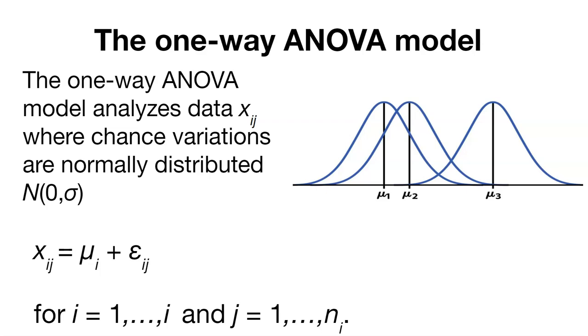Now, what does that look like? How can we visualize a one-way ANOVA model? Well, in this case, the one-way ANOVA model analyzes some data, X, that we're interested in, where there's chance variation and that those variations are normally distributed.